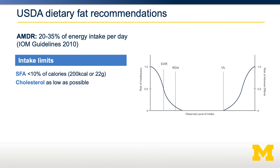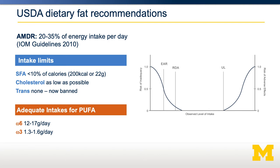It is also recommended that cholesterol is as low as possible within a nutritionally adequate diet. Trans fats, a particular class of fatty acids, are now banned from our food supply, so we should be consuming little to no trans fatty acids. Polyunsaturated fatty acids, omega-6s and omega-3s, have adequate intake set. They vary between men and women: 12 to 17 grams per day for omega-6, and 1.3 to 1.6 grams per day for omega-3s. The higher number is for men.